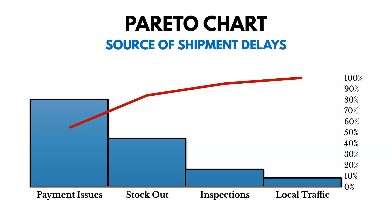Most of the time a shipment gets delayed, it's caused by payment issues. With a Pareto chart, it's sorted by the most occurring issue on the left and the least occurring issue on the right. So we've got payment issues, stockouts, inspections, and local traffic contributing to the shipment delays.